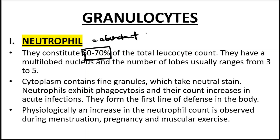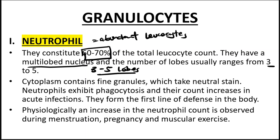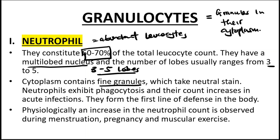Neutrophils are about 60 to 70 percent of the total number of leukocytes. They have a multi-lobed nucleus with about three to five lobes — this is how you identify them on a histological slide. The cytoplasm contains fine granules, that's why they are called granulocytes. These neutrophils have fine granules in the cytoplasm which take a neutral stain — that's why they're called neutrophils.